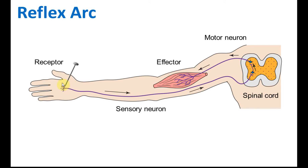Let's look at the pathway of reflex reactions. Say your hand is accidentally poked by a nail. When your hand touches the nail, the receptor — which is the skin — detects the pain and touch. The receptors detect the stimulus and send it to the spinal cord through the sensory neurons. The impulse travels to the spinal cord, and the spinal cord recognizes this as an emergency case. Therefore, it does not send the impulse to your brain for decision making.